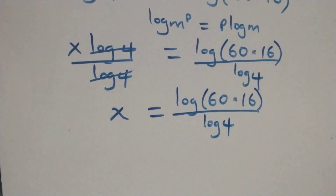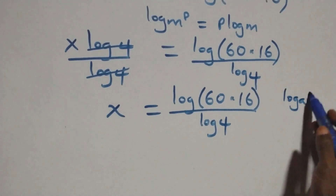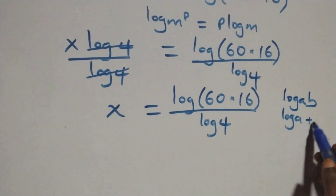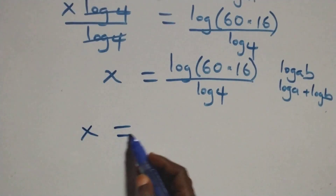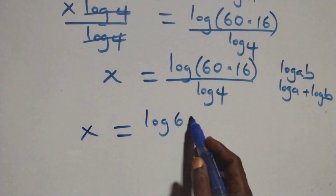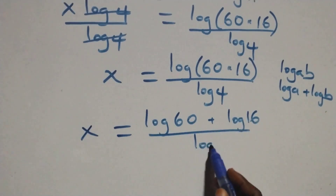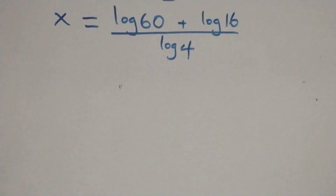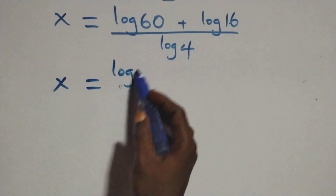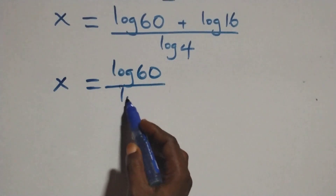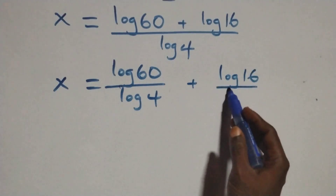This follows the law of logarithms. We have log of a times b equals log a plus log b. So x equals log sixty plus log sixteen over log four. Then we separate this into two fractions: x equals log sixty over log four plus log sixteen over log four.